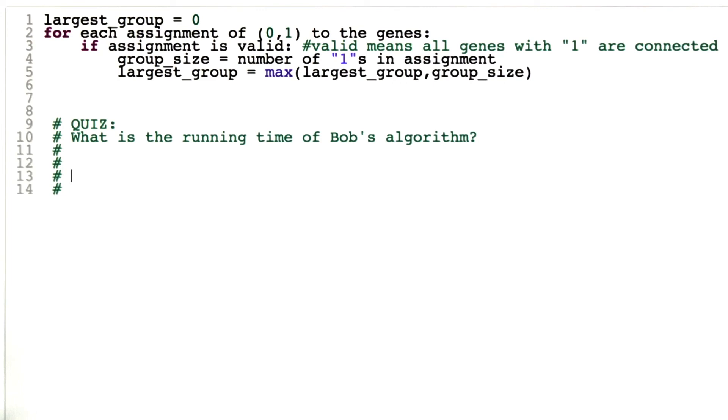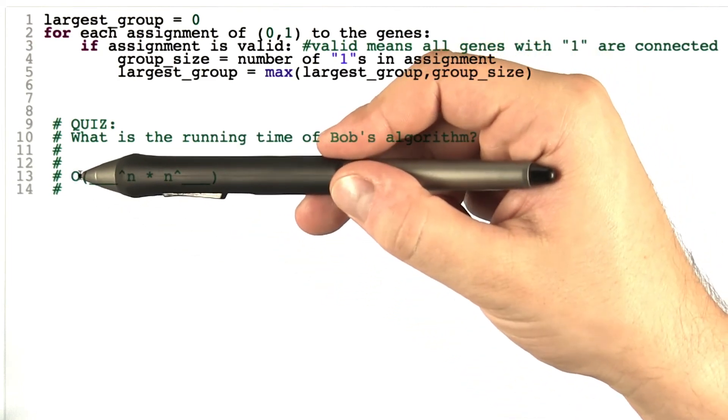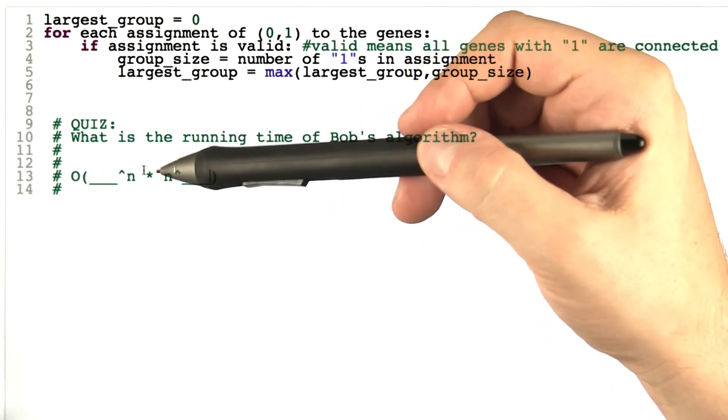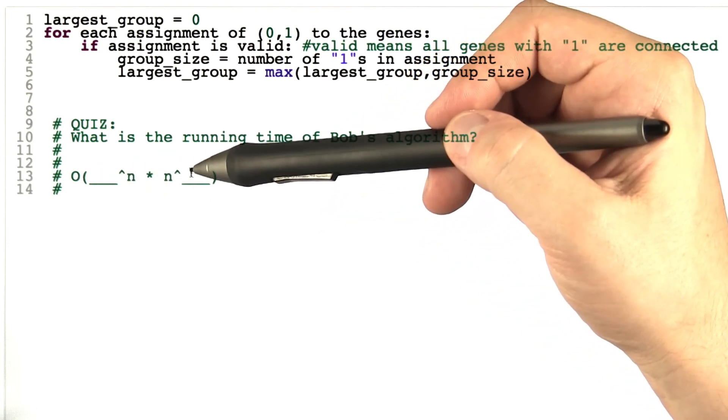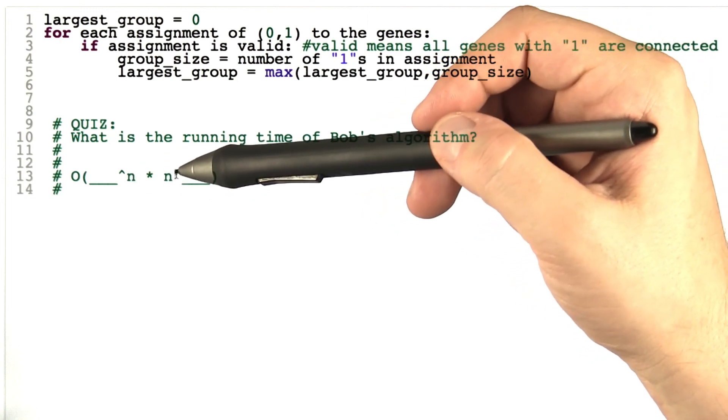And of course, I would like you to state that in big O notation again. So, I'm going to reveal to you that the running time is going to be O of some number to the power of n times n to the power of some other number or the same number, where n is the number of genes, in case you were wondering.